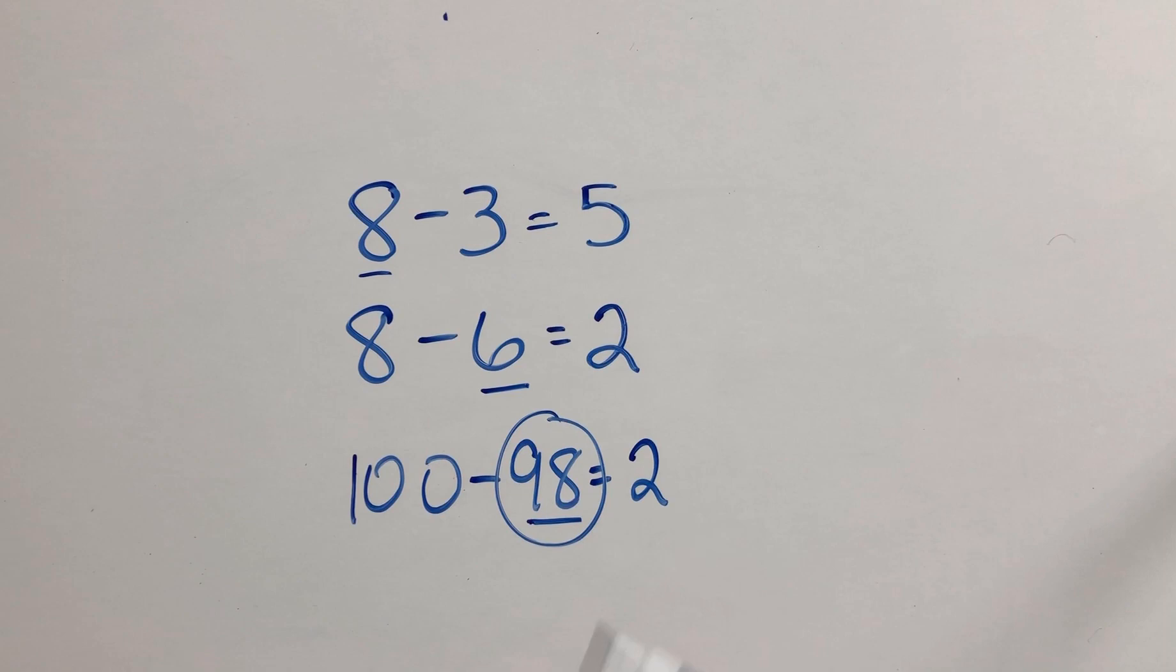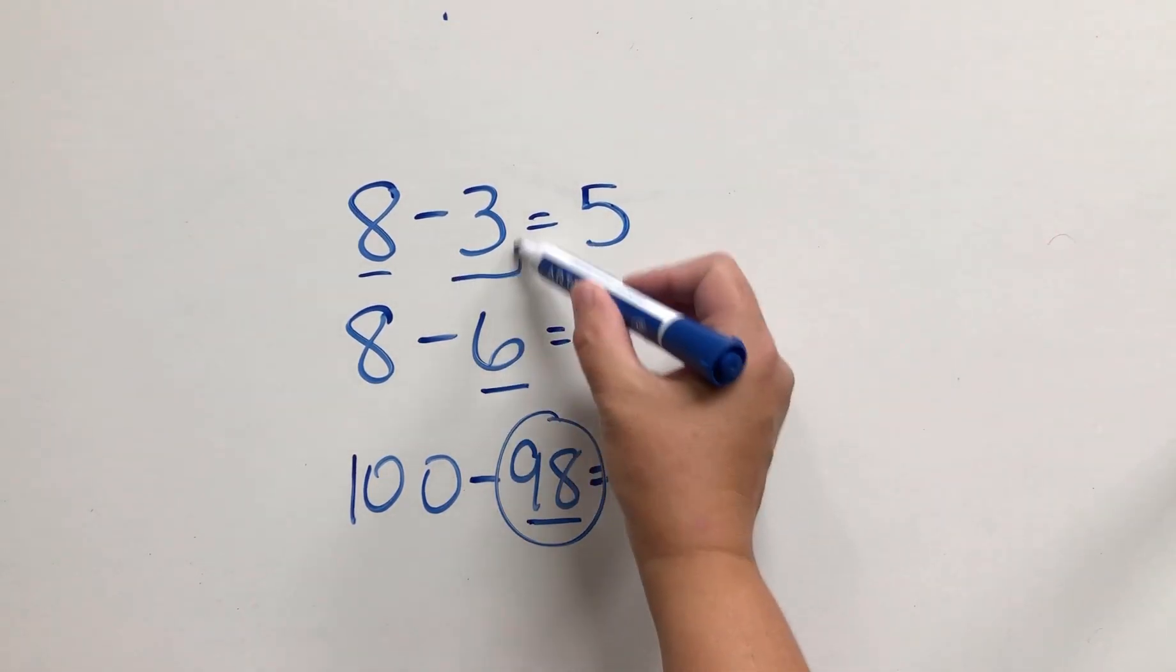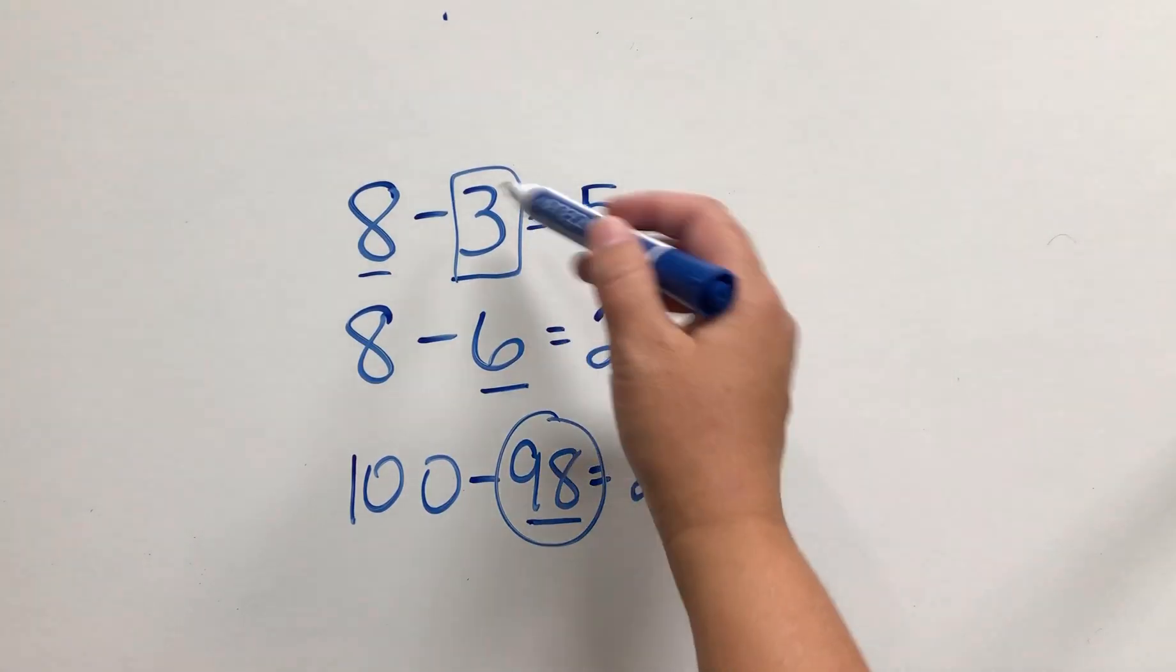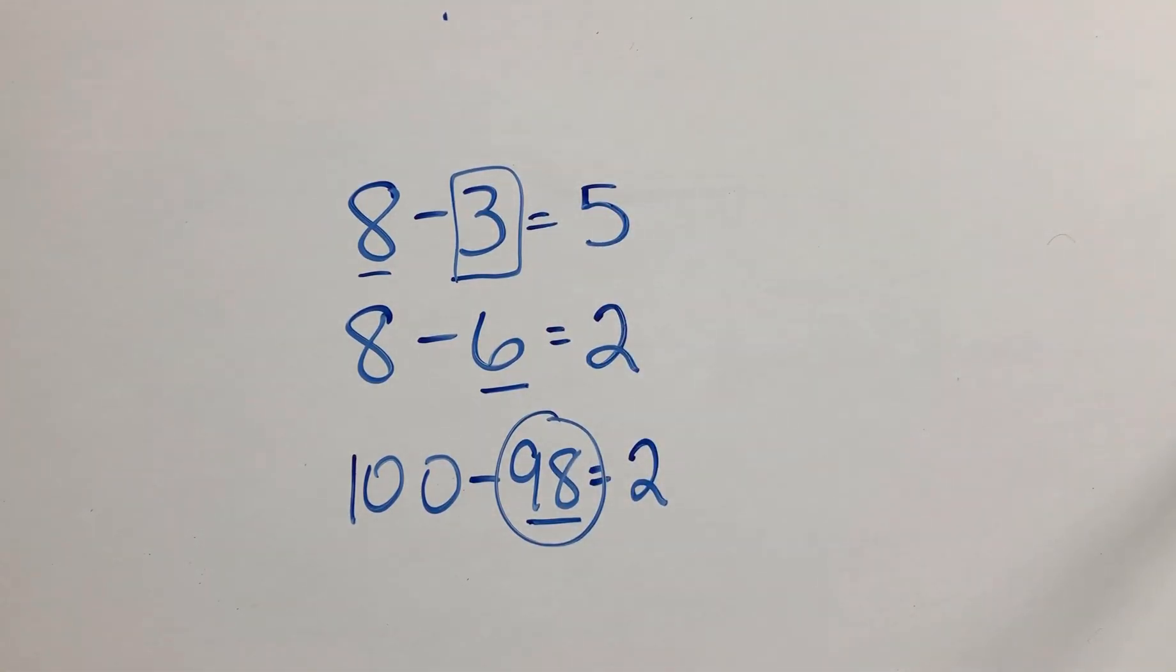So basically, we're trying to come to the conclusion here that counting back works best when you have a smaller second number that you're taking away, so a one, two, three, or four ideally. Counting up works best when we have a smaller difference between the two.